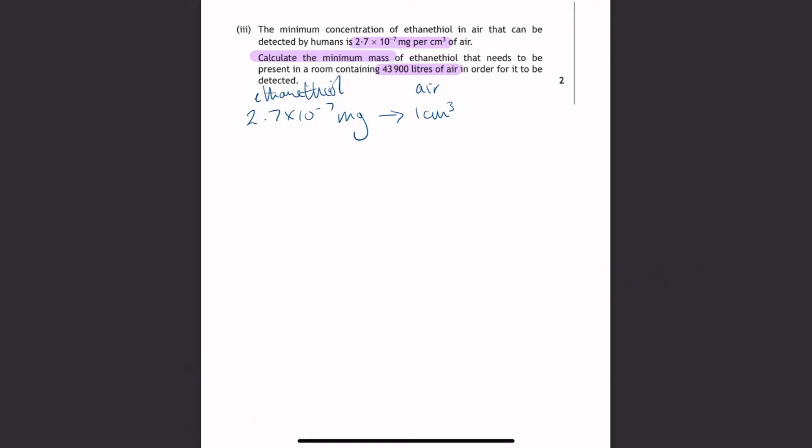So it tells us that 2.7 times 10 to the minus 7 milligrams is in one centimetre cubed of air. So I'll write air and ethanethiol just so I know what these numbers are related to. And then it wants the minimum mass of ethanethiol in 43,900 litres of air. So we want a mass of ethanethiol, which means I'm going to put a question mark, because we're trying to find out that number. This shows us that we can start scaling down and up. So this is what we call direct proportion. Numeracy calculations are most easily done by using proportion.